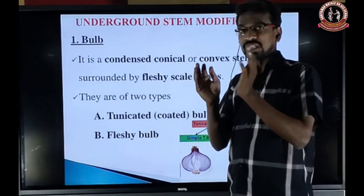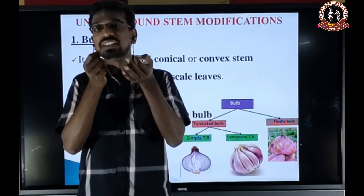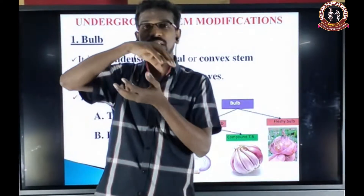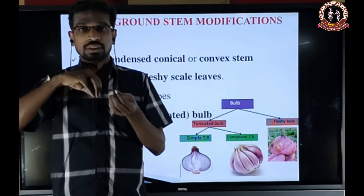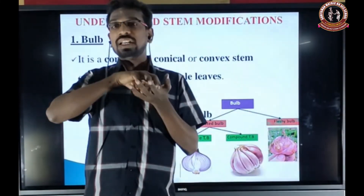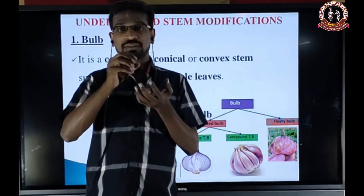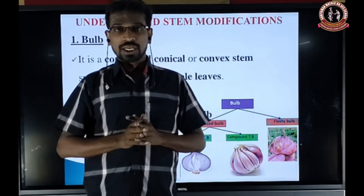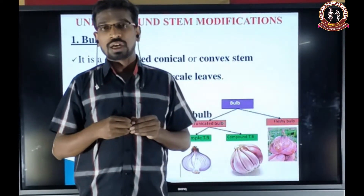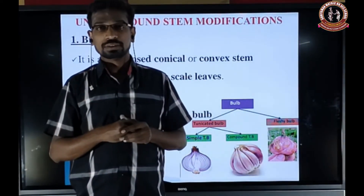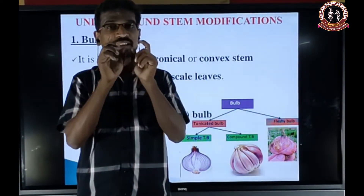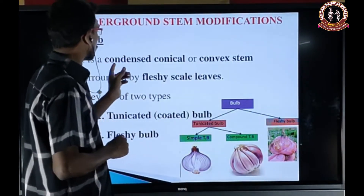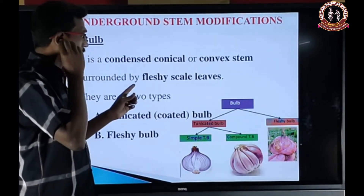Inside the onion you can see a fleshy, juicy structure in the center region. The outer is a dry scale leaves, but inside the scale leaves are fleshy and closely packed with one another from a bud-like structure. In garlic (Allium sativum) also, the outer has dry scale leaves but inner is fleshy. So the condensed conical or convex stem is surrounded by fleshy scale leaves.